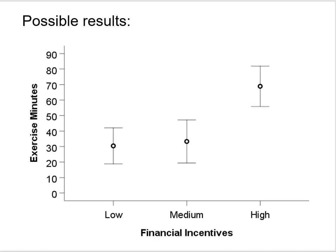There are any number of ways your study might turn out. Here's a graph illustrating one possible set of results. Maybe the people in the high incentive condition — represented by this mean and its error bars — will score significantly higher than the two other treatment conditions with respect to mean scores on exercise minutes. This figure shows the independent variable as three points on the x-axis: low incentive, medium incentive, and high incentive people, with the dependent variable on the y-axis. Here the high incentive people scored significantly higher than the other two groups.